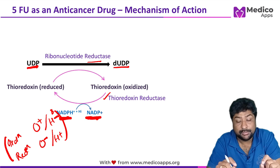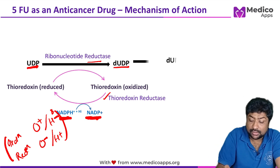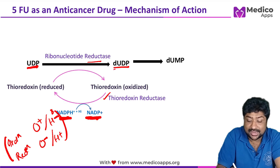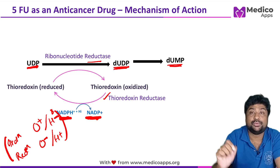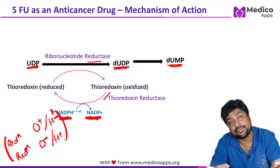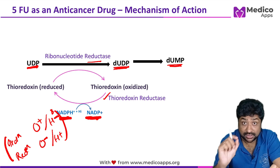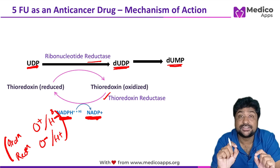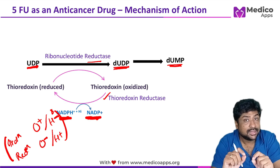Next is a simple dephosphorylation reaction: dUDP is converted to dUMP. A phosphate group is removed, converting the diphosphate into a monophosphate.